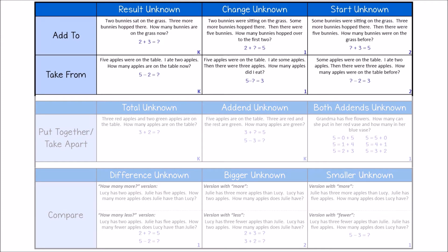The first categories we will look at are the add to and take from problems. These are action problems, meaning the story has one amount that's being acted on. We have a starting amount, a change occurs — either something is added to it or taken from it — which leads to our result. Each problem either has an unknown start, unknown change, or unknown result.